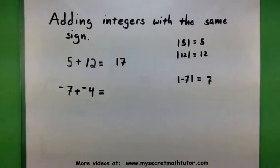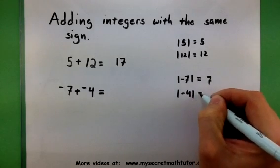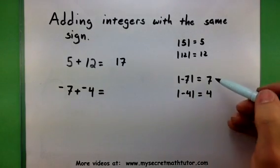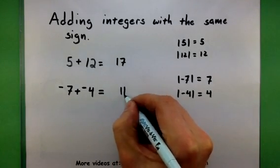Well, that's a positive 7. And the absolute value of negative 4? Well, a positive 4. So I add these guys together, and end up with an answer like 11.